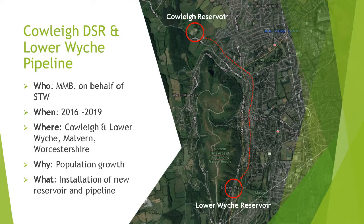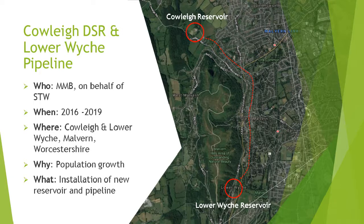To demonstrate how this works in real life, I'm now going to talk about a project we recently finished called the Cowley Distribution Service Reservoir and Lower Witch Pipeline, located near Malvern in Worcestershire. The project ran from 2016 to 2019 and was required to improve resilience in Malvern, maintain efficiency and increase network capacity for future population growth. The solution was to build a new treated water reservoir at the existing Cowley DSR site — essentially an underground concrete structure designed to store water. A pipeline was also planned from Cowley to Lower Witch through Malvern to distribute the additional water supply.